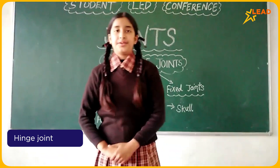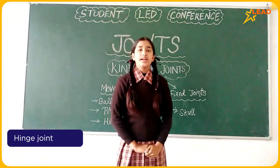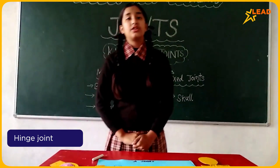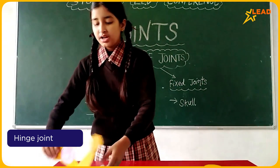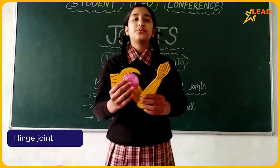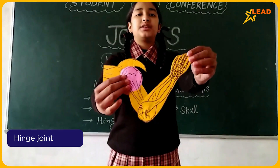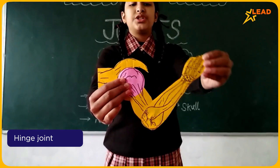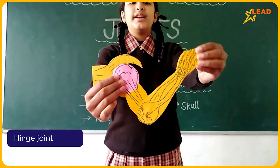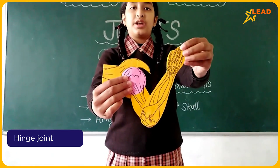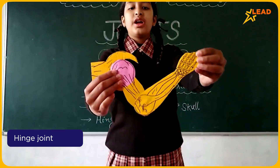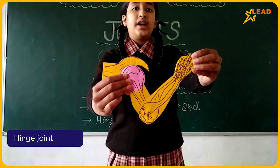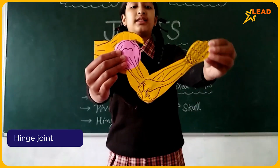Hinge joint. It allows us to move in only one direction. The hinge joint's movement is similar to a door hinge. It is present in our elbow and our knee, and it moves like this.